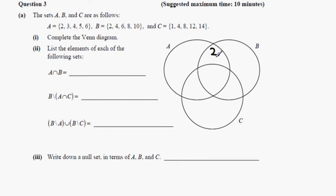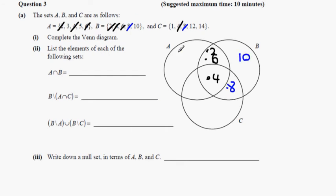Completing the Venn diagram: 2 and 6 go in A and B (the intersection of A and B). Coming to all three sets is the number 4. What's in B and C is 8; what's left in B only is 10; what's left in A only is 3 and 5 because it has nothing in common with C. And what's left in C only is 1, 12 and 14.